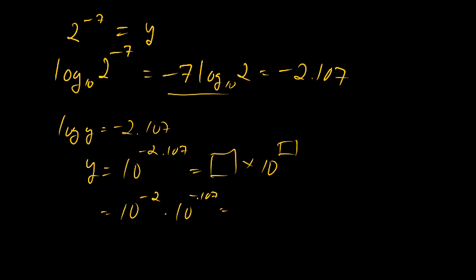This is simply 10 to the negative 2 times about 0.78 or 7.8 times 10 to the negative 3. We go back up here and the answer to this question is 7.8 times 10 to the negative 3. You could have done this with your calculator without any problem. What's the big deal?